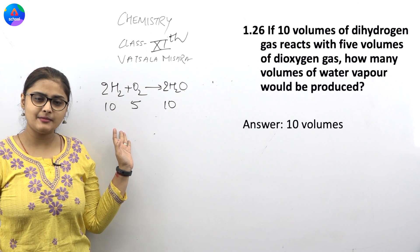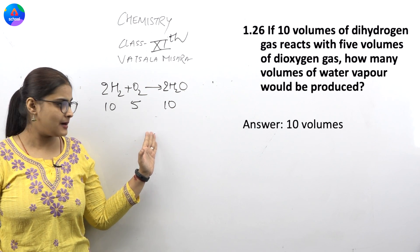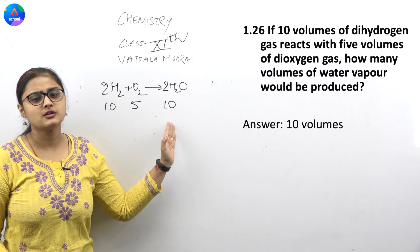If you have 10 volumes of hydrogen with 5 volumes of oxygen, then you have 10 volumes of water vapor. So the answer is 10 volumes.